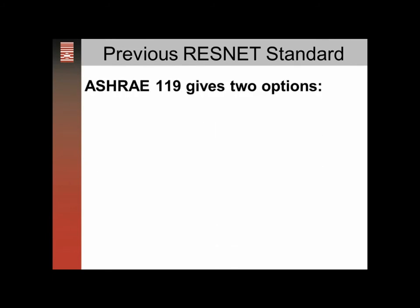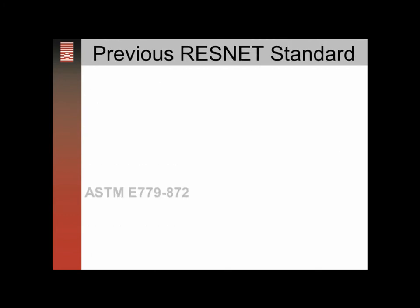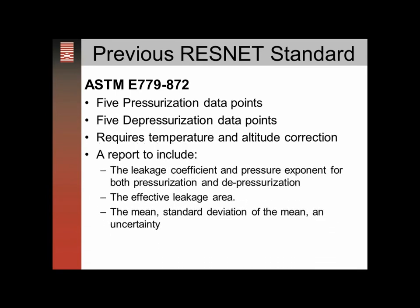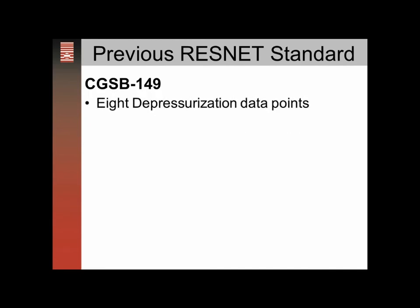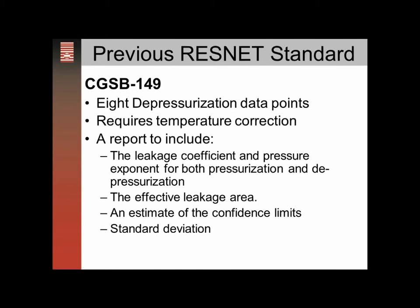The previous ResNet standard pointed to ASHRAE 119, which gives us two test options: the ASTM E779 and the CGSB 149. The ASTM E779 required five pressurization data points, five depressurization data points, temperature and altitude correction, and a report including the leakage coefficient, pressure exponent for both pressurization and depressurization, the effective leakage area, and the mean, standard deviation of the mean, and uncertainty of the test. CGSB 149 included eight depressurization data points, temperature correction, and similar report requirements to E779.